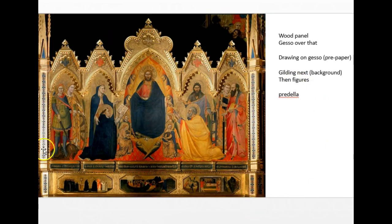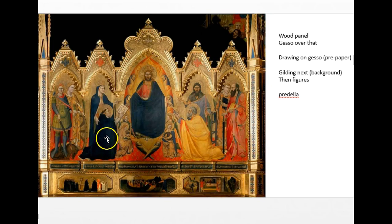The frames are usually done by someone else, although sometimes the contract will specify that the painter is responsible for subcontracting a framer. The small paintings at the bottom of a frame are called predella — they usually have scenes related to what's going on in the main panel. Sometimes the contract will specify who gets to do the predella images. Sometimes you can put an apprentice on something like that, or get an apprentice to do the gilding. But usually a contract will specify that the master does the faces and the hands — the things that matter the most.